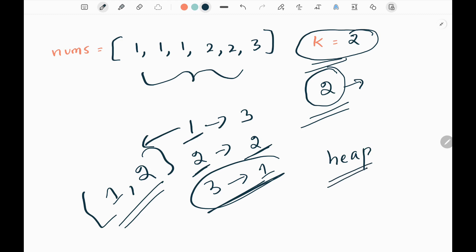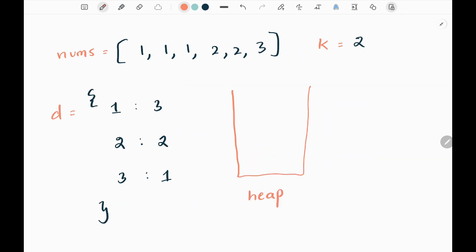Now we will see how we are going to do this. So initially I will create a dictionary where I will store the element and the count of the element. So here one is the element and the count of one is three and two is the element that is in the input array and the count of two is two. Two has appeared two times, right? So the count is two. Then three has appeared one time.